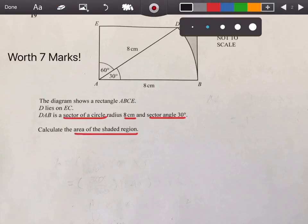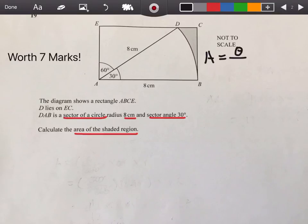This question is worth 7 marks. The diagram shows a rectangle ABCE. D lies on EC, and DAB is a sector of a circle, radius 8cm, and sector angle 30 degrees. Calculate the area of the shaded region, which is from DC to B. The first thing we should consider is to write down the formula of a sector of a circle, which is A = θ/360 × πr². Now we're going to substitute what we see. Theta is 30 degrees, so 30/360 × π, which is 3.14, times by r squared, which is 8 squared. It's not 4 squared, because a sector uses the full radius of 8.